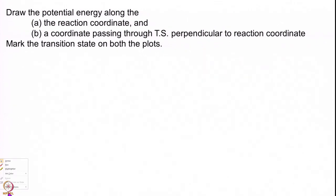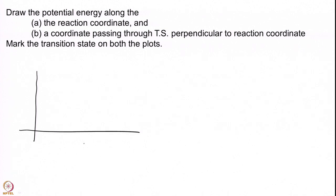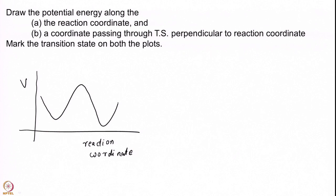Hopefully you have taken a pause. Now let us solve it together. For the first one we have to draw the potential energy along the reaction coordinate. This is the figure that you have commonly seen probably in every single textbook in kinetics — you get a figure where this is reactants, this is products, and this is the transition state, the maximum saddle point. So this is your very familiar figure.